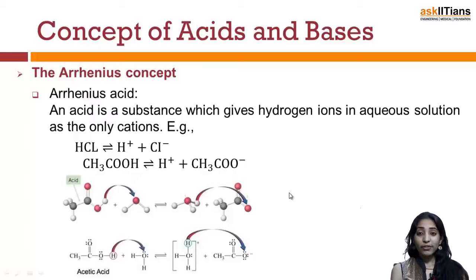The very first concept of acid and base that was given is the Arrhenius concept. According to the Arrhenius concept, an acid is a substance which can give hydrogen ions in aqueous solution as the only cation. For example, if I take HCl,